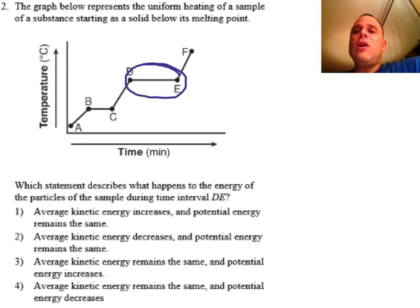So from D to E, what is happening to the energy of the sample? Is the average kinetic energy increasing? I've already noted in the last question that when we have a plateau like this, the energy is not increasing. Well, the average kinetic energy I should say is not increasing because that relates to temperature. So it cannot be number one. Is the average kinetic energy decreasing? No, it's not decreasing.